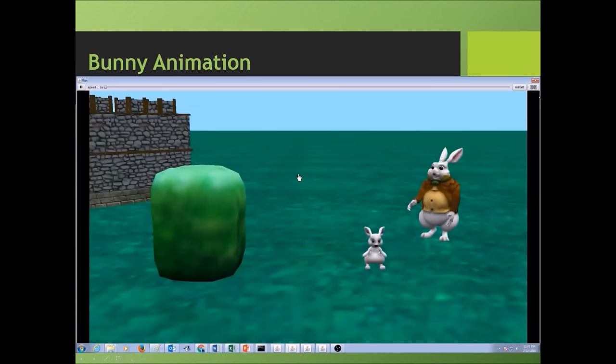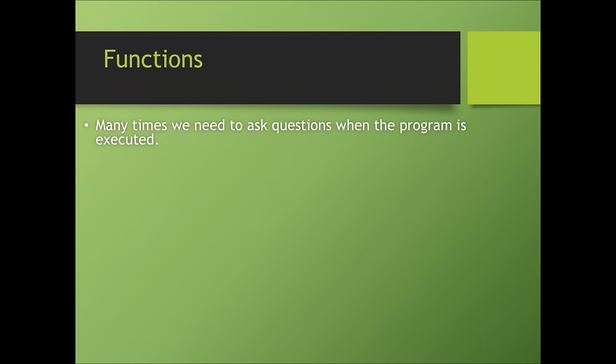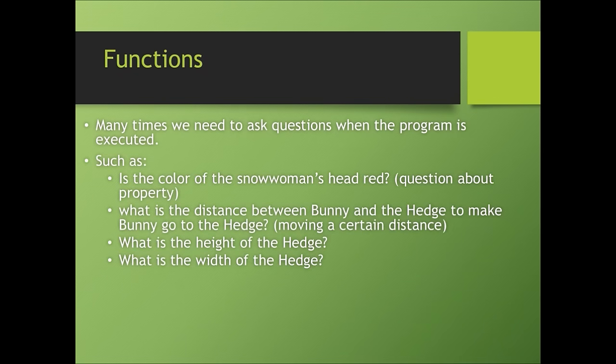Let's watch a bunny animation. Functions: Many times we need to ask questions when the program is executed, such as: Is the color of the snowwoman's head red? This question is about the color property.